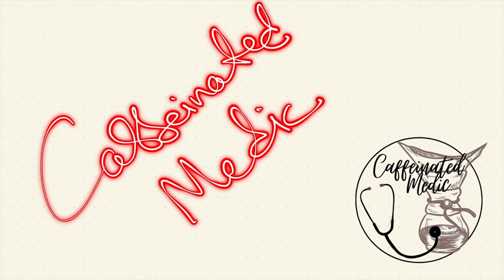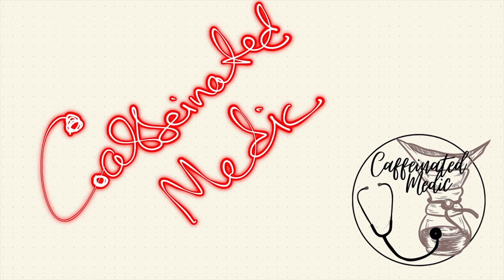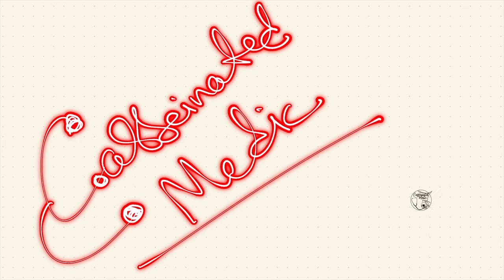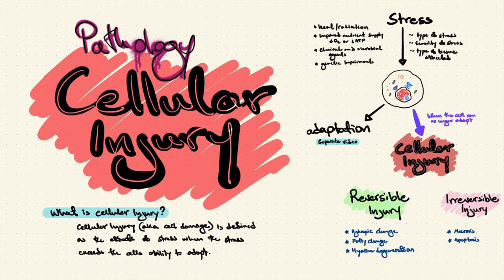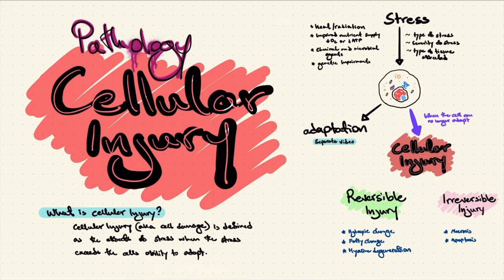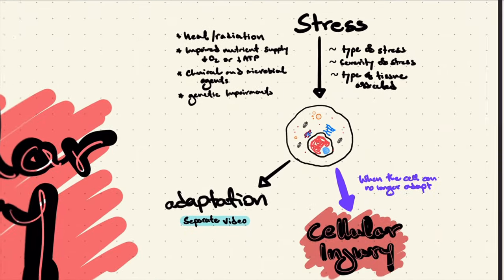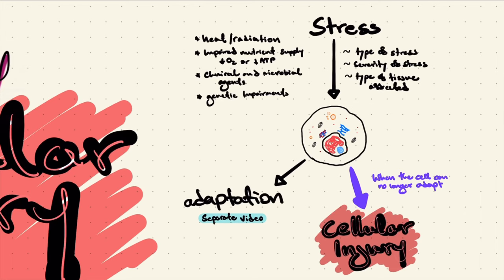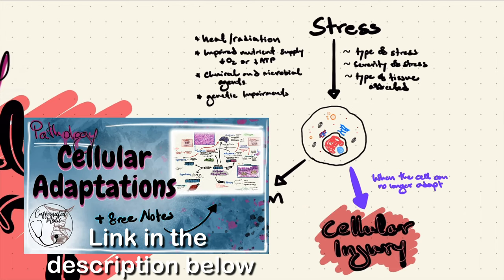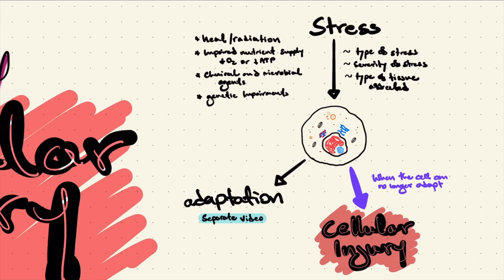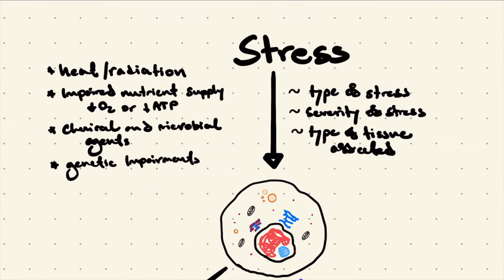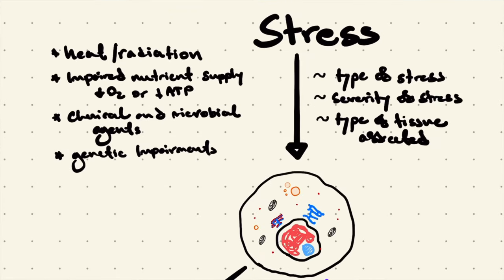Hey guys, this is the Caffeinated Medic, welcome to the channel. This video is about cellular injury. Cellular injury, also known as cell damage, is defined as the effects of stress when the cell can't adapt to that specific stress. We already spoke about stress in my previous video about cellular adaptation — make sure you go and check it out. Basically, stress is anything that affects the functioning capacity of cells.